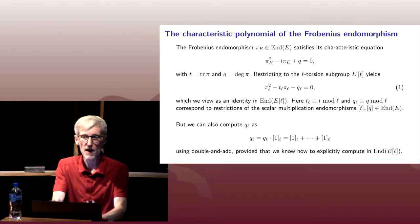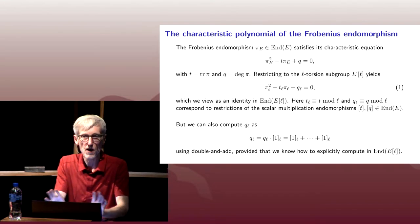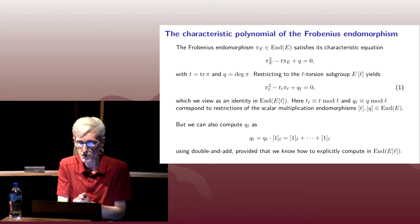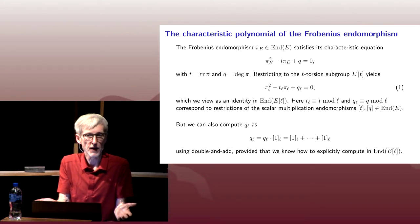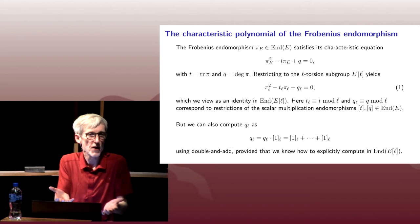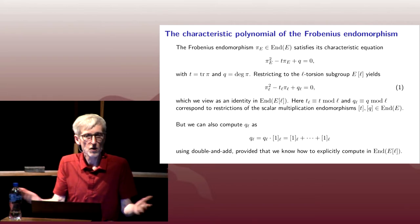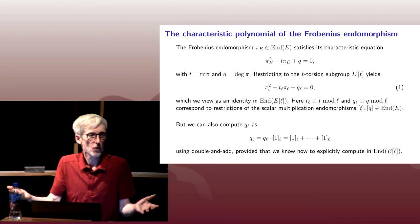I'm not going to do that. We don't need to do that for implementing Schoof's algorithm, but that's a useful thing to do. A lot of information can be gained from doing so. So what are some other elements of our endomorphism ring? There are certain endomorphisms that are always there. What are the endomorphisms that every elliptic curve has? There's always multiplication by m maps for every integer m.